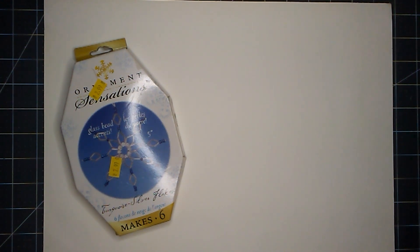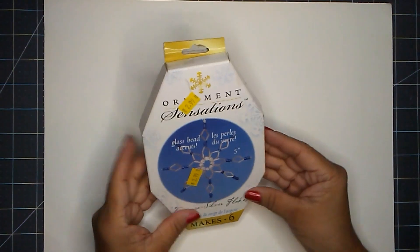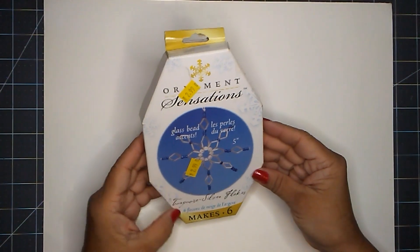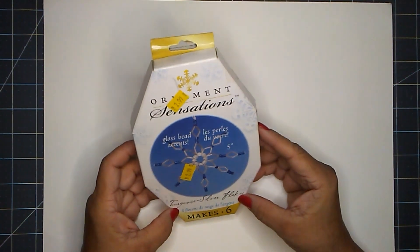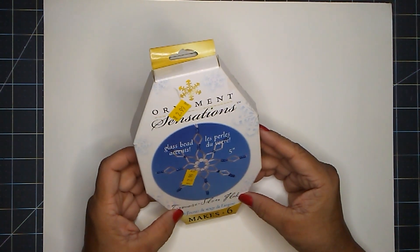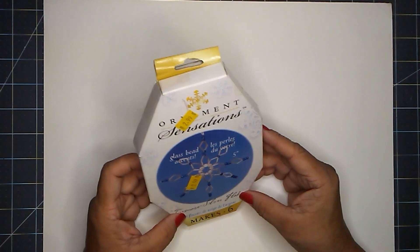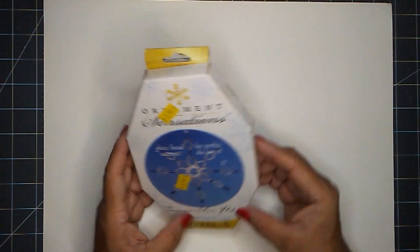I will be working on an ornament kit I found at the thrift store. This kit makes six snowflakes. It says turquoise silver flakes and it is glass bead accent. It's by ornament sensations.